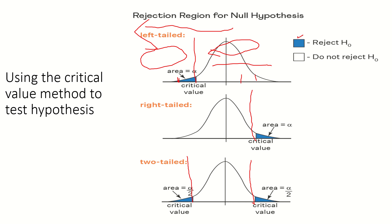The blue color stands for the rejection region and the white color stands for the acceptance region. Similarly, in a right-tail test, rejection takes place on the right side of the distribution — whether Z or T. When rejection takes place on the left side it is a left-tail test; on the right side it is a right-tail test. In a two-tail test, suppose the level of significance alpha is 5%, or 0.05, the rejection region is split.